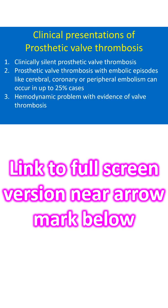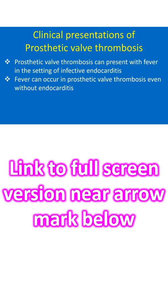Clinical presentations: 1. Clinically silent prosthetic valve thrombosis. 2. Prosthetic valve thrombosis with embolic episodes — like cerebral, coronary, or peripheral embolism — can occur in up to 25% of cases. 3. Hemodynamic problems with evidence of valve thrombosis. Prosthetic valve thrombosis can present with fever in the setting of infective endocarditis; fever can also occur in prosthetic valve thrombosis even without endocarditis.